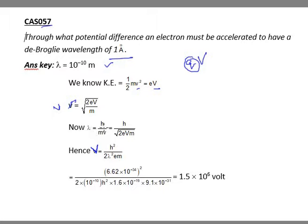Potential difference will be h squared by 2 lambda squared em. If I find the value of V, then I will have to square this equation.